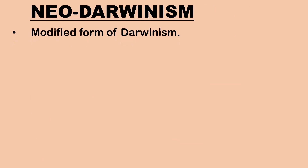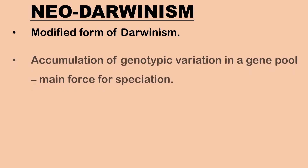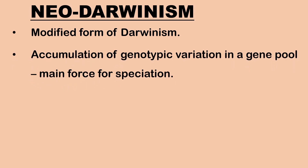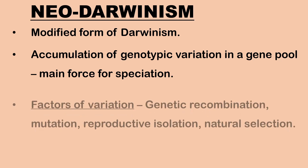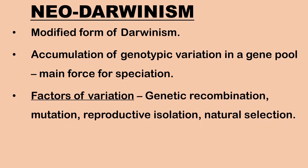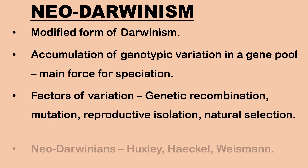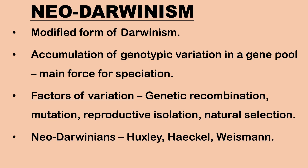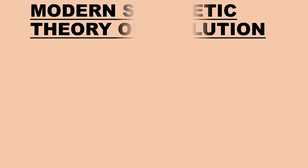Next is Neo-Darwinism, a modified form of Darwinism. Accumulation of genotypic variation in a gene pool is the main force for speciation. Genetic recombination, mutation, reproductive isolation and natural selection are the various factors of variation. The Neo-Darwinians like Huxley, Haeckel, Weismann and others included Mendelian genetics and natural selection to explain evolution.